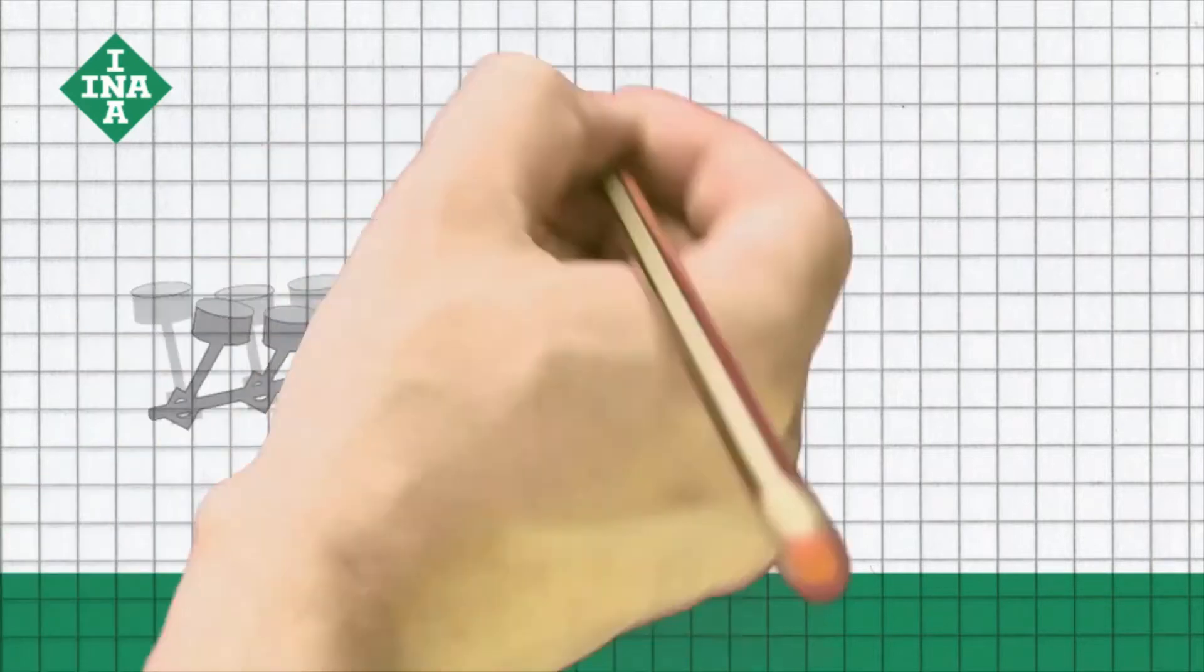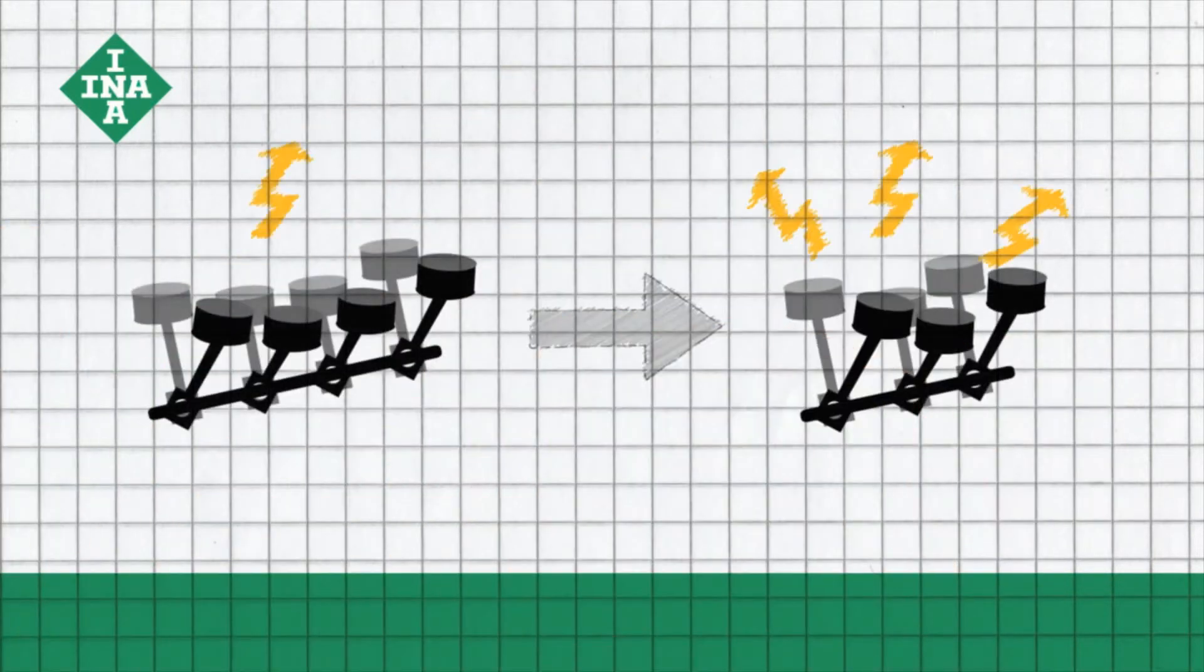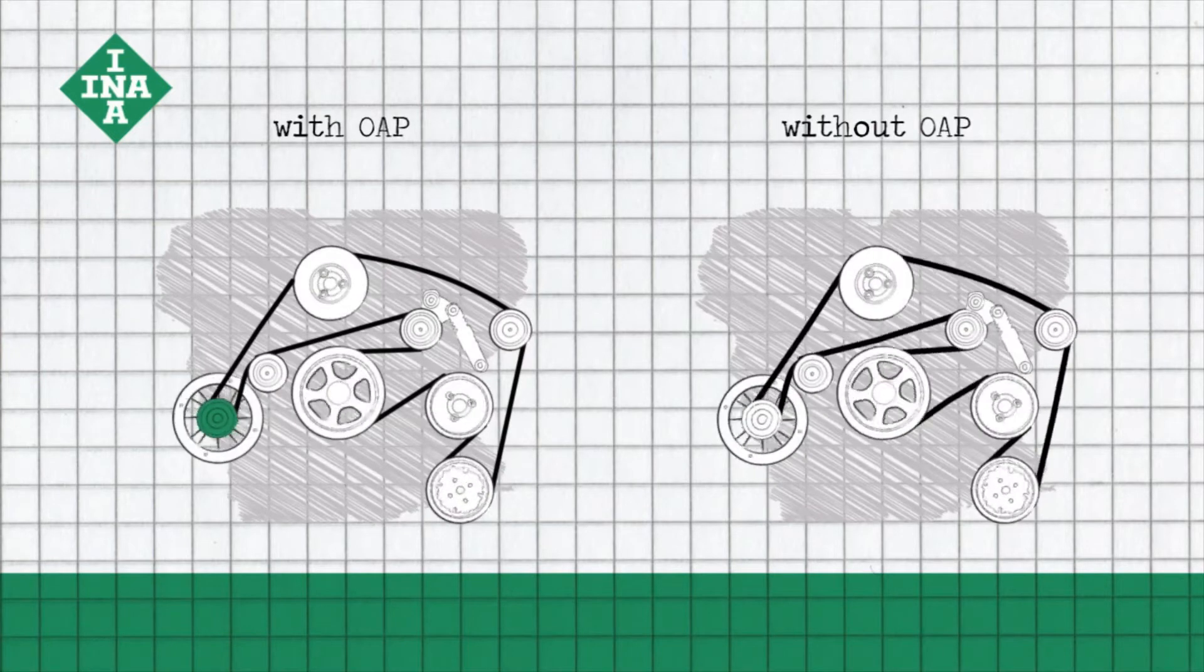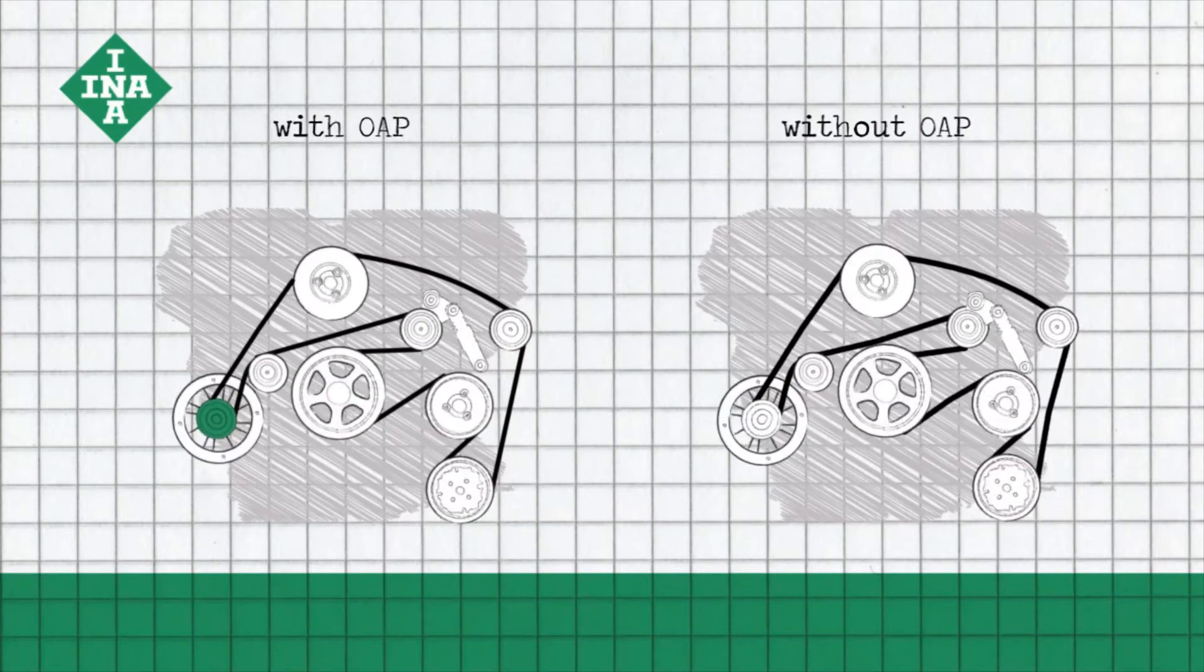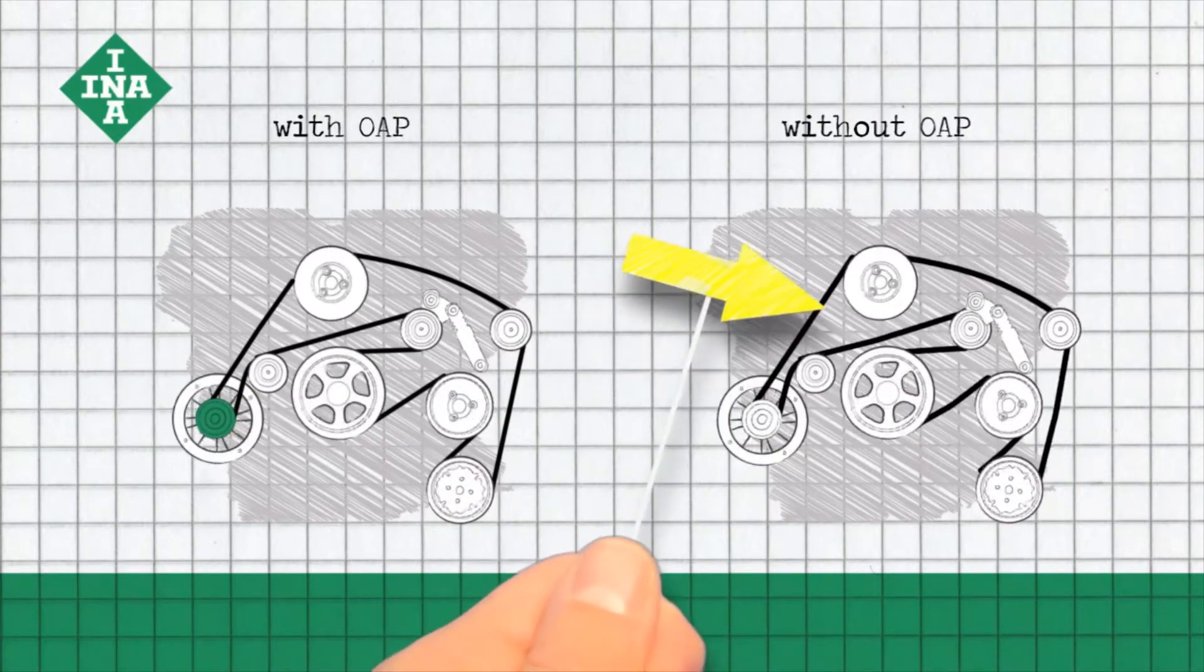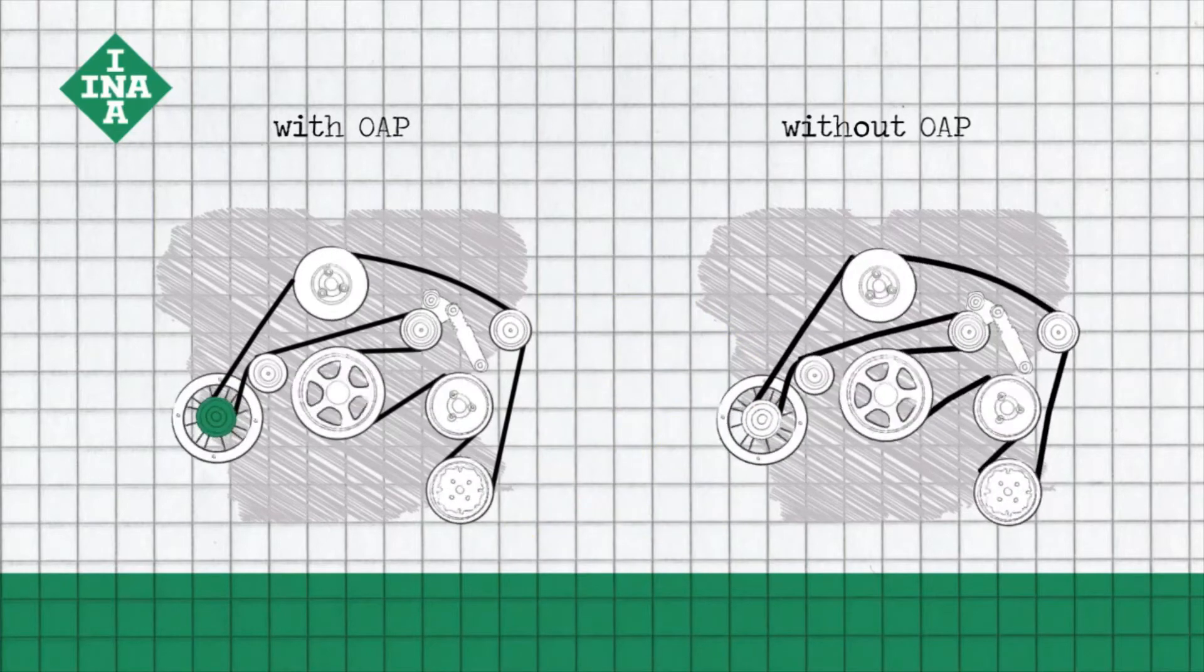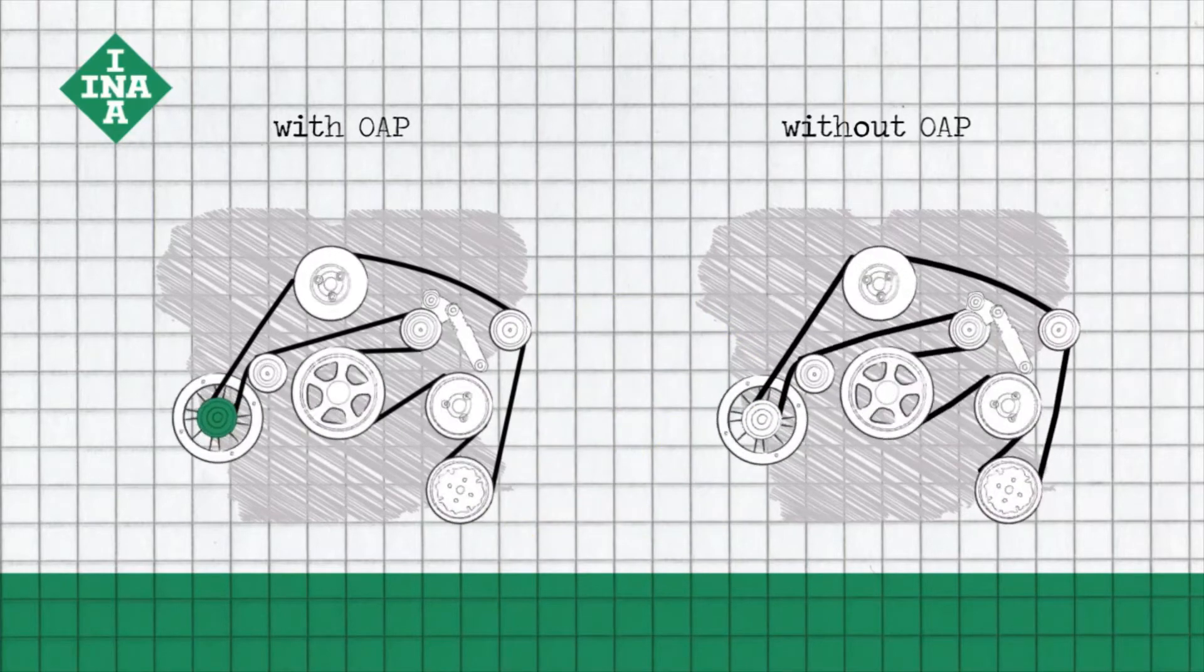This extends the service life of all accessory drive components. With the many electrical systems and even smaller engines in modern vehicles, a rigid belt pulley is unable to adequately prevent rotational irregularities in the accessory drive. The resulting vibrations can cause damage to the accessory drive and even lead to total engine failure.